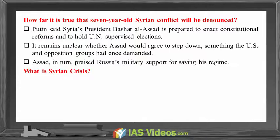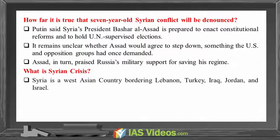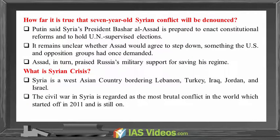What is the Syrian crisis? Syria is a West Asian country bordering Lebanon, Turkey, Iraq, Jordan and Israel. The civil war in Syria is regarded as the most brutal conflict in the world, which started in 2011 and is still ongoing.